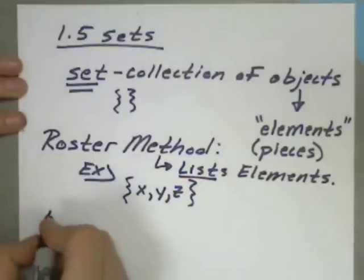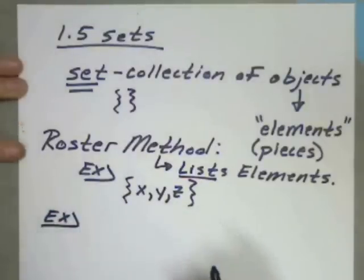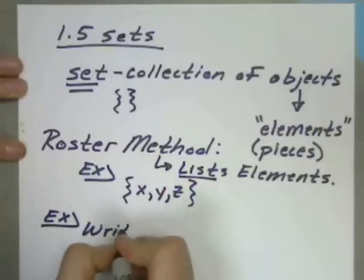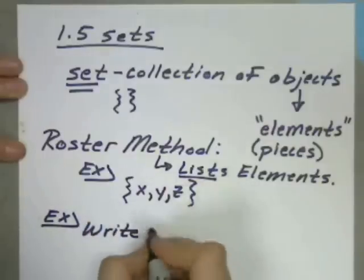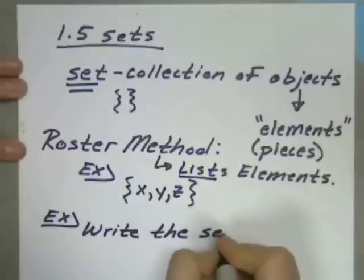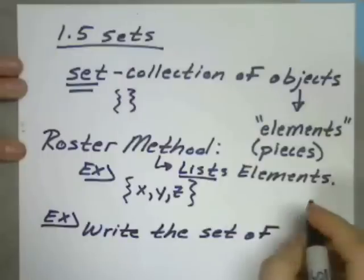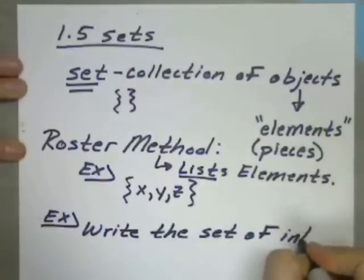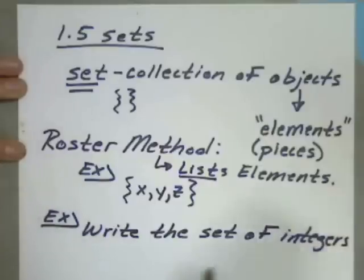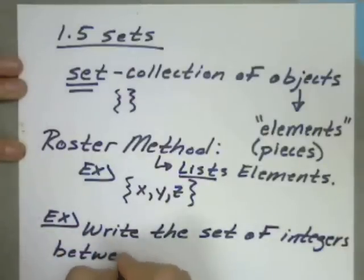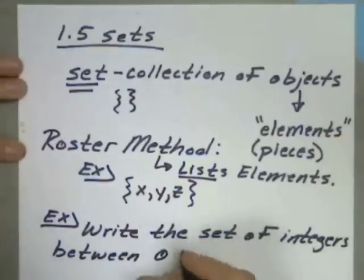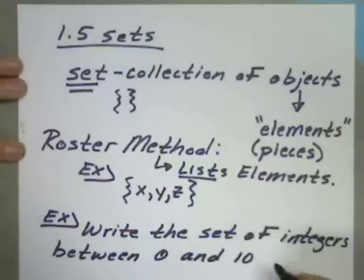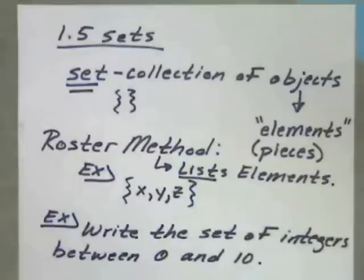For another example, using the roster method, I could say, write the set of integers, and I'm working with the author here from your text, if you're following from that section, between 0 and 10. Now we have to be very careful with the words here on what he wants or what the author wants, because notice he doesn't say to include 0 and 10. He says between them.